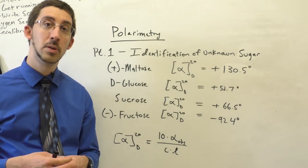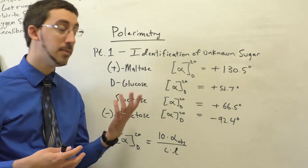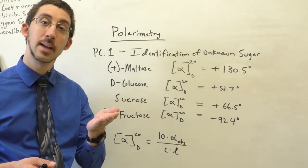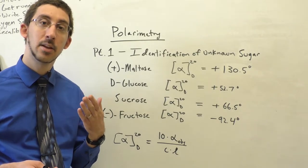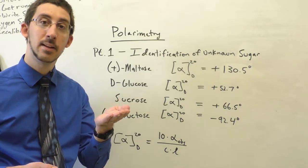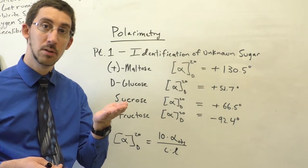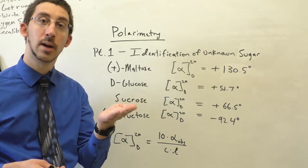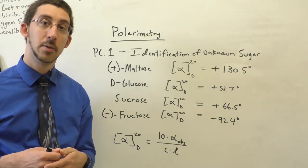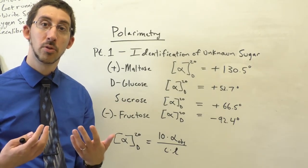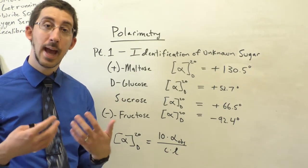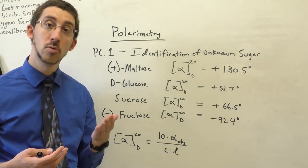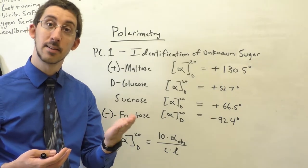In today's experiment we're going to be looking at the use of polarimetry. Polarimetry is the use of plane polarized light, passing that light through a solution that contains a chiral molecule and looking at the rotation of that plane polarized light.